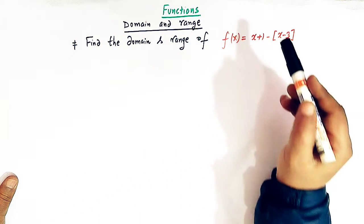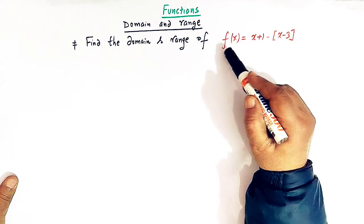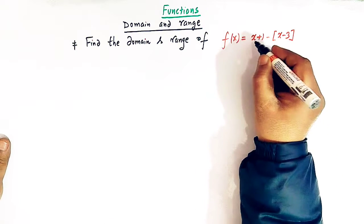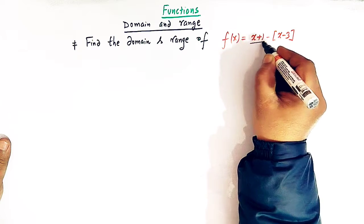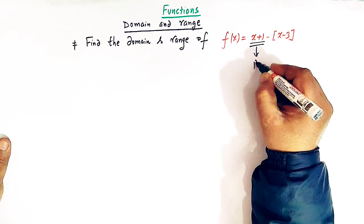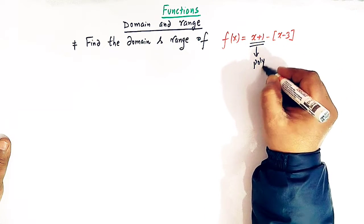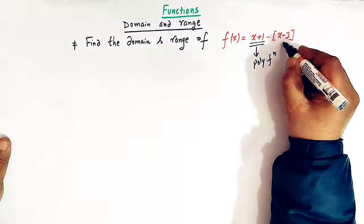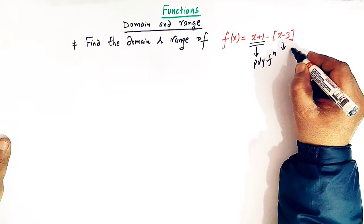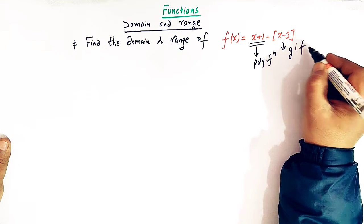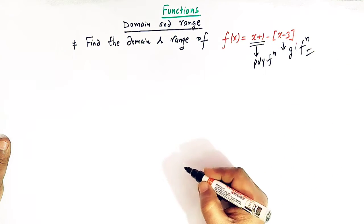Here we have a function f(x) which is a combination of a polynomial function — x + 1 is a polynomial function — and the greatest integer of (x - 3), which is a greatest integer function.